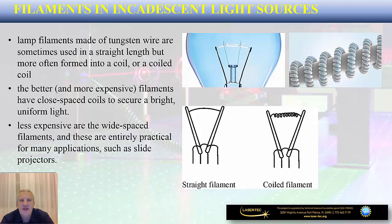Sometimes we have close-spaced coils to secure brighter and uniform light, and sometimes we have a coil over a coil to further increase the total length of the filament. For cost-affordable light bulbs, wide-spaced filaments are used, which are practical for applications such as light projectors that don't require strong light. Filaments made out of tungsten come in different shapes and forms that determine the luminescence of the light bulb.